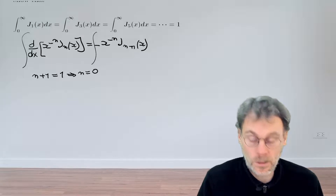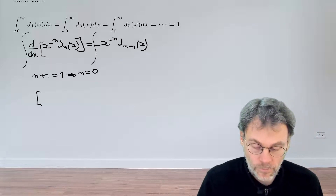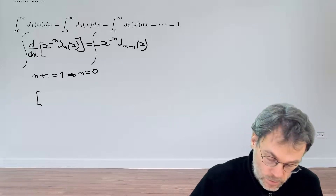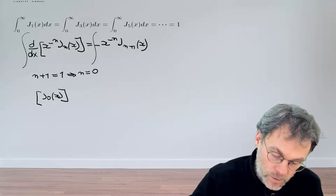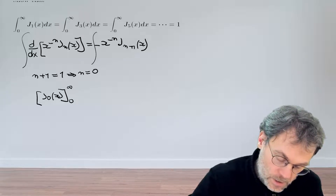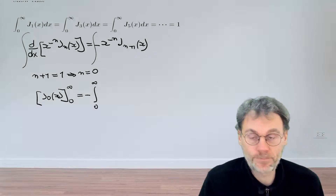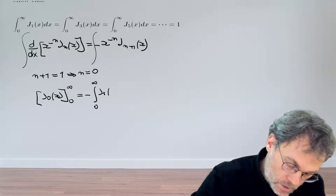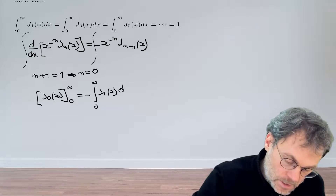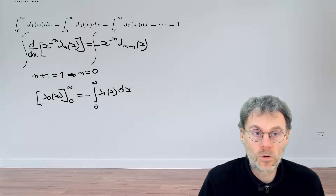So when we do that, we get for the left-hand side x to the power of minus 0 — so that's just 1 — times J₀(x), evaluated between the bounds infinity and 0, equals minus the integral from 0 to infinity of x to the power of minus 0 times J₁(x) dx.